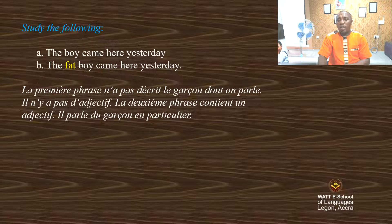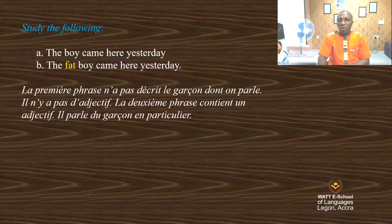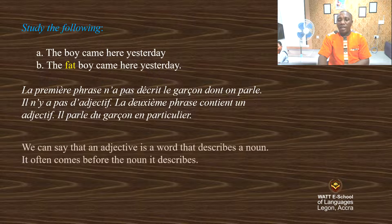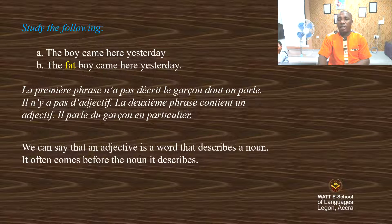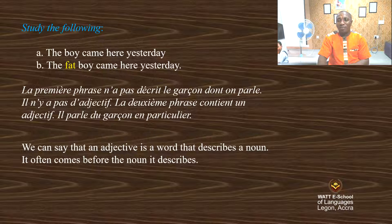Now, what can we say about adjectives? If 'boy' is a noun, and the word that comes before the boy describes that noun, so it means that an adjective is a word that describes a noun. It often comes before the noun it describes. That's what you see on your screen.